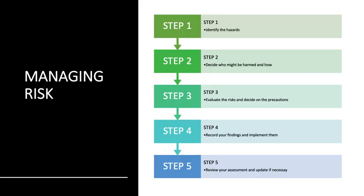Managing risk. As you proceed through your training program, remember the following steps. Step one: identify the hazards. Step two: decide who might be harmed and how. Step three: evaluate the risks and decide on the precautions. Step four: record your findings and implement them. Step five: review your assessment and update if necessary.